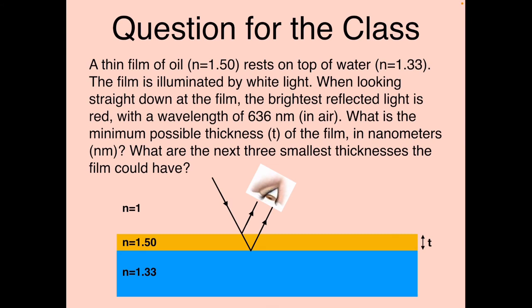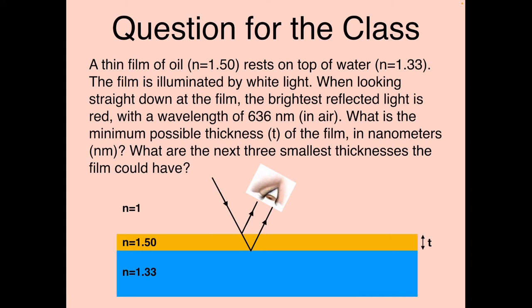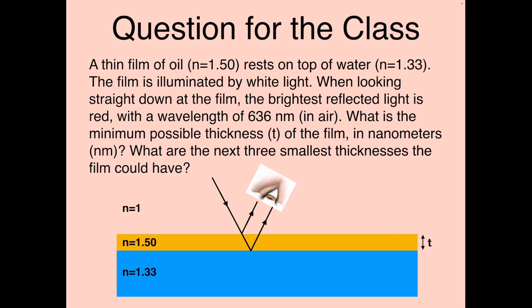Let's try another one from chapter 34. A thin film of oil with index of refraction n = 1.50 rests on top of water where n = 1.33; above the oil is air where n = 1. The film is illuminated by white light. When looking straight down at the film, the brightest reflected light is red with a wavelength of 636 nanometers in air. What is the minimum possible thickness of the film, and what are the next three smallest thicknesses?